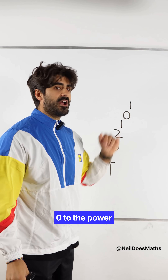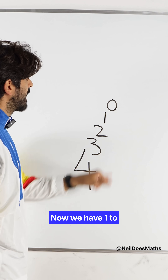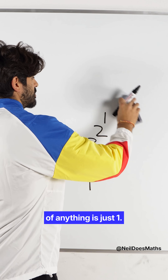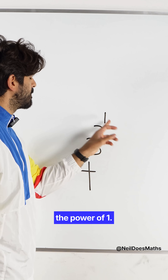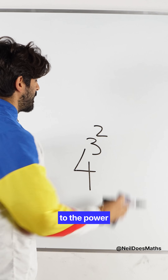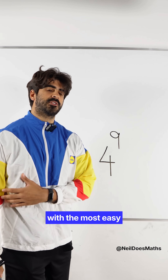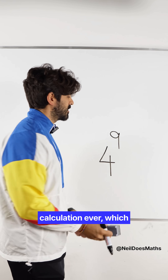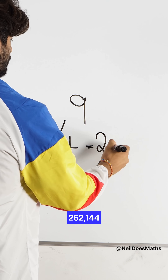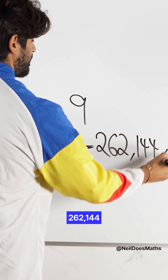0 to the power of 1 is just 0. Now we have 1 to the power of 0 — again, 1 to the power of anything is just 1. Then I have 2 to the power of 1, which is 2. Then I'm left with 3 to the power of 2, which is 9. And now I'm left with 4 to the power of 9, which is 262,144.